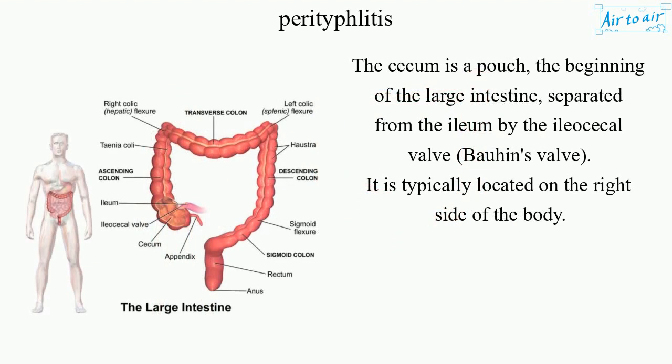The cecum is a pouch, the beginning of the large intestine, separated from the ileum by the ileocecal valve, Bauhin's valve. It is typically located on the right side of the body.